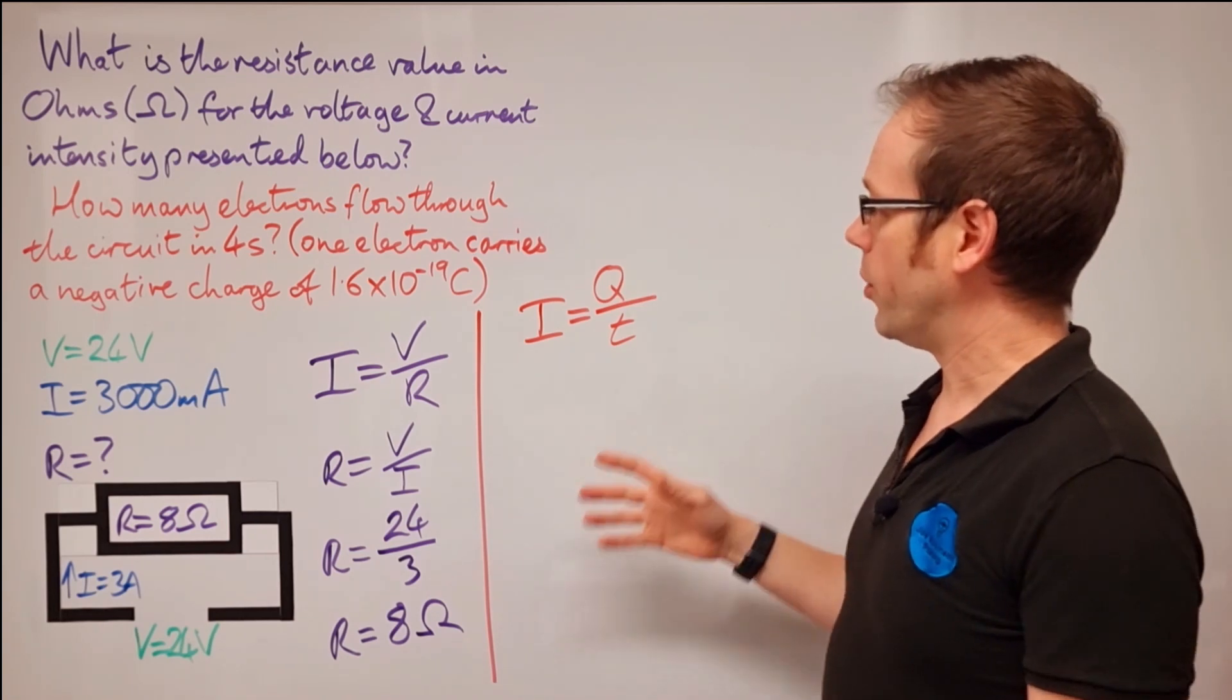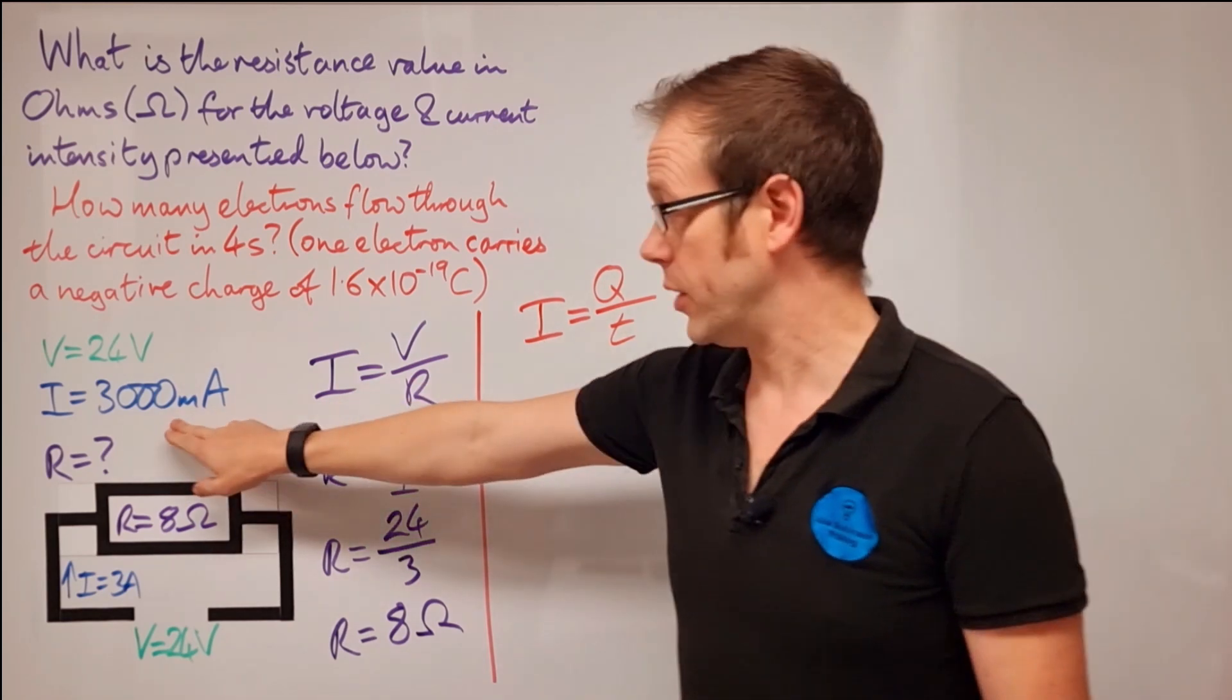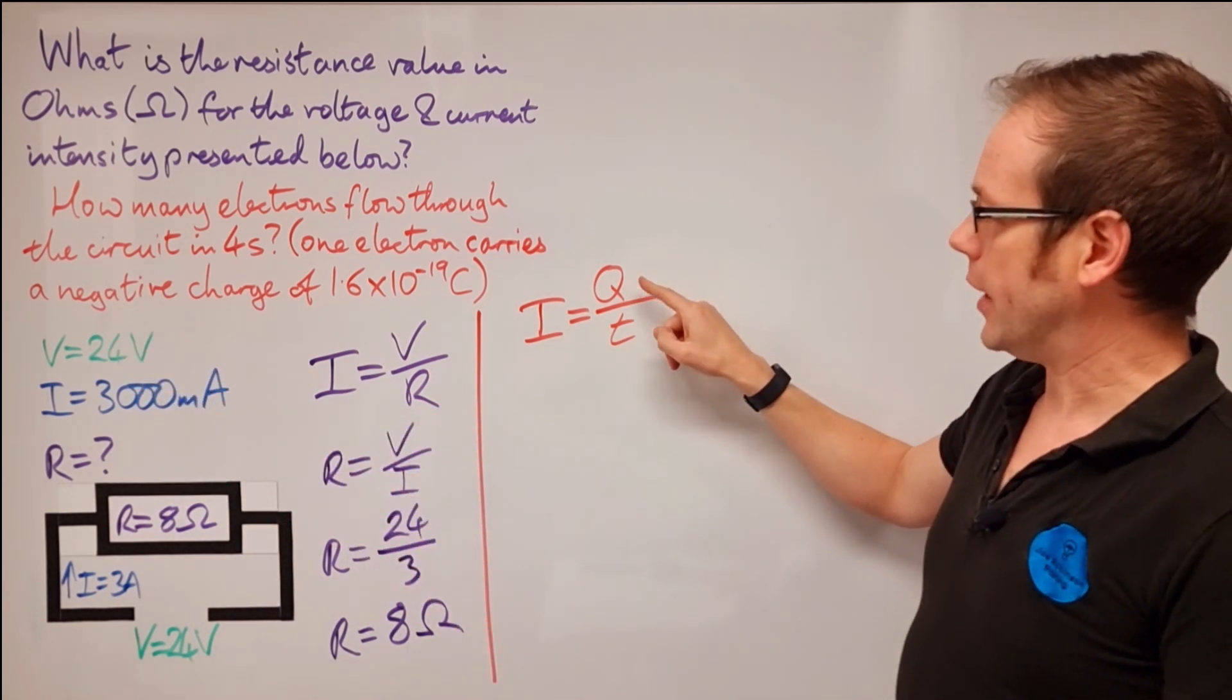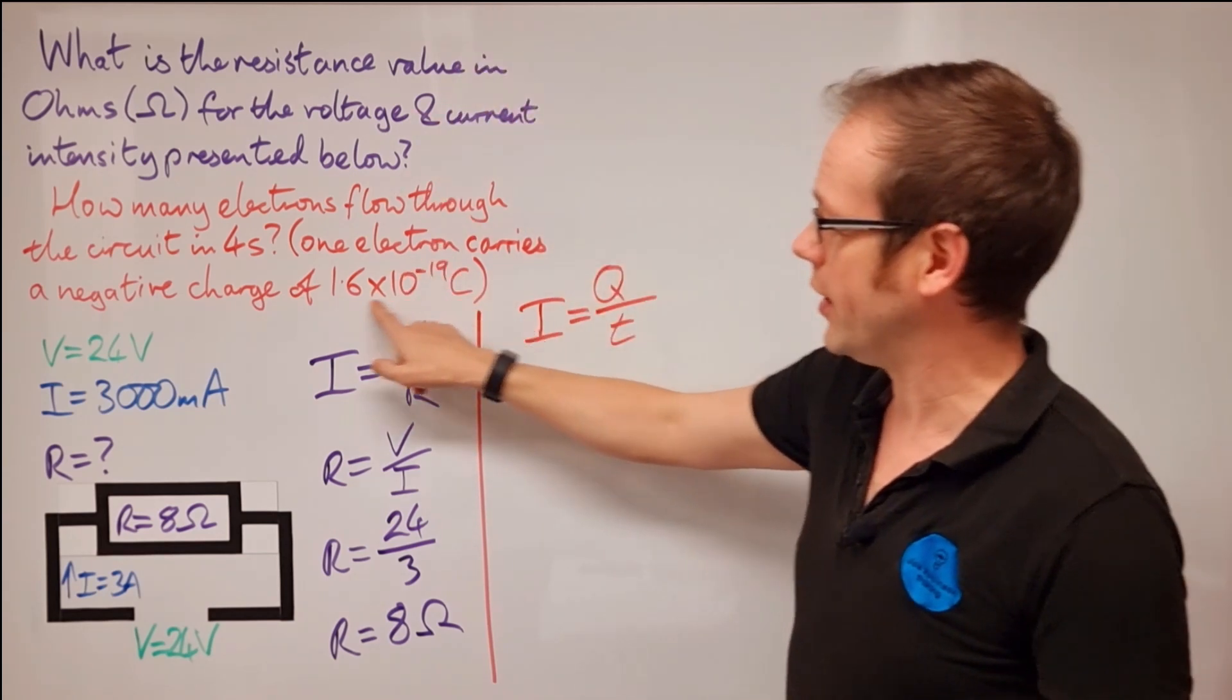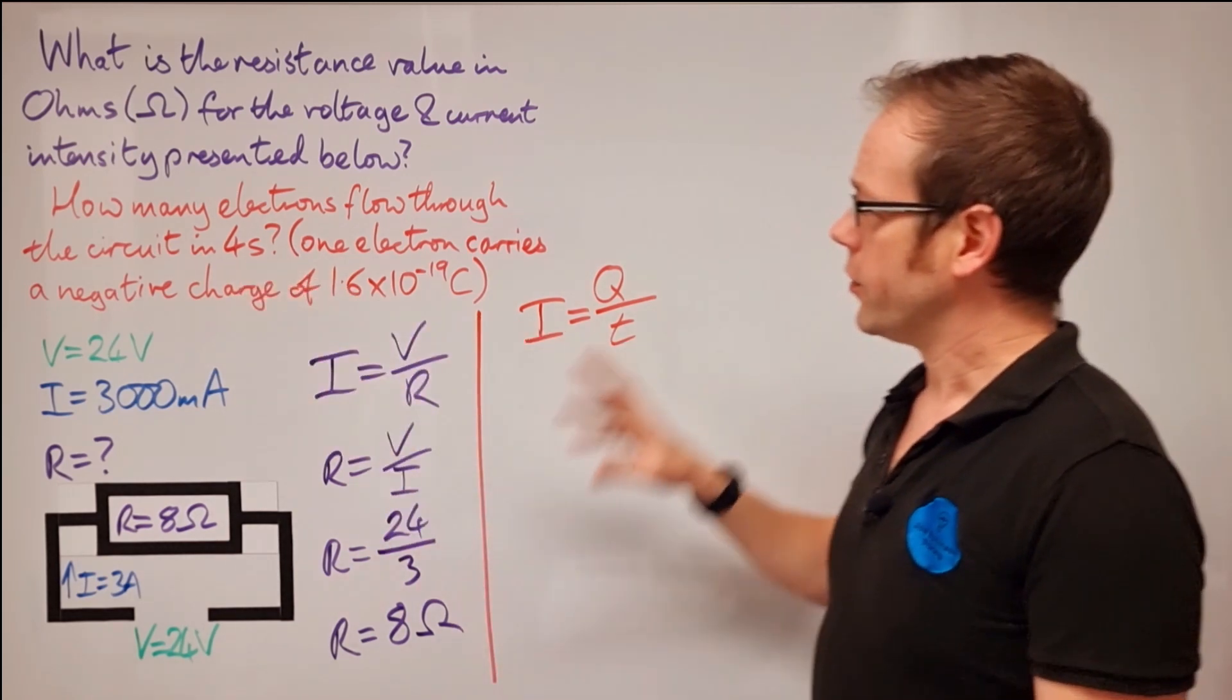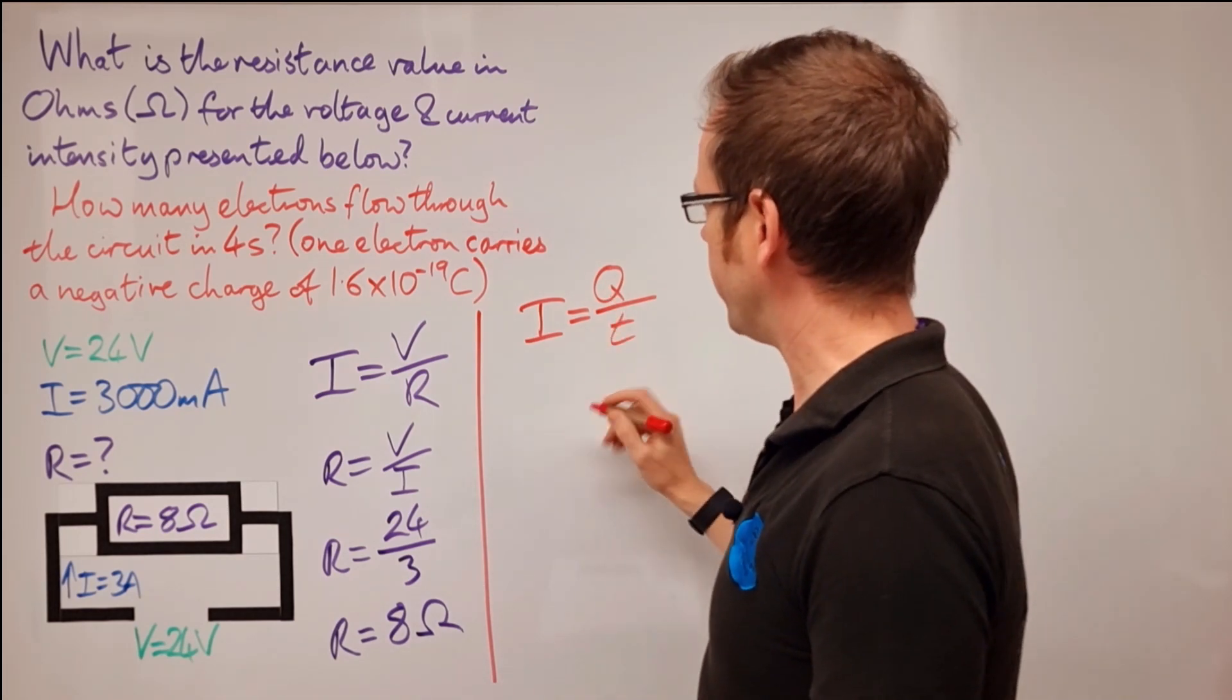But basically what we've got here is the current in the circuit is equal to the charge in coulombs divided by the time in seconds. Now, again, we're at the point where look at what we know for this question. Do we know what the current in the circuit is? Well, yes, we do. We've already got that as 3000 milliamps or three amperes, as we just saw. Then we've also got charge. Now charge hasn't appeared anywhere in the question. We've got a little something to do with charge here, but we're not going to be able to use that yet. And we've also got T, the time is four seconds. So the first stage to answer in this question is to figure out what the charge in the circuit is going to be. And again, we need to rearrange the formula.